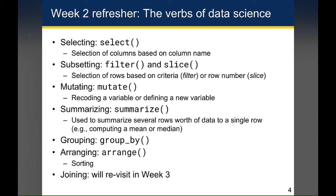Mutate is the verb that we use to recode variables or define new variables. Summarize is useful for taking multiple rows of data and condensing it down to a single row, like a summary statistic. An example of this would be computing a mean or a median, or counting the number of rows.